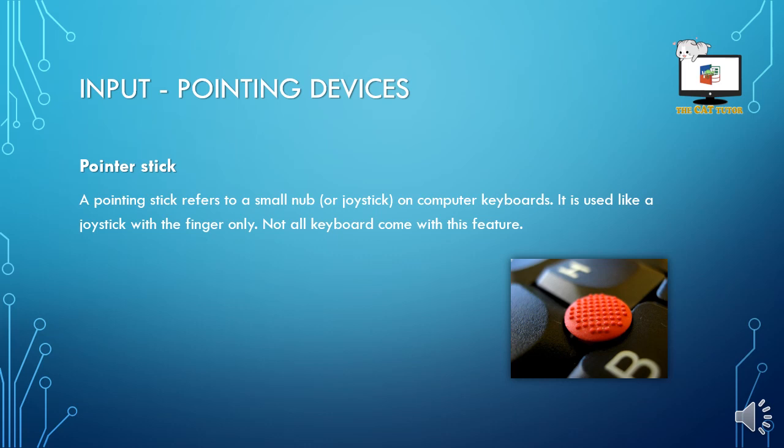Pointer sticks refer to a small nub or a joystick on the computer keyboard itself. You won't find a great many keyboards with this, but if you find a red button somewhere above one of your keys, don't worry — that would be a pointer stick. Similar to a joystick, you just move it up and down, left and right, and it works with only your finger to move the cursor on your screen.